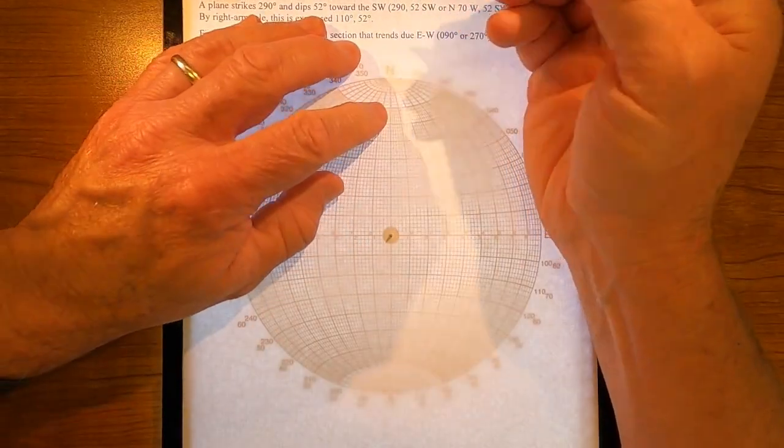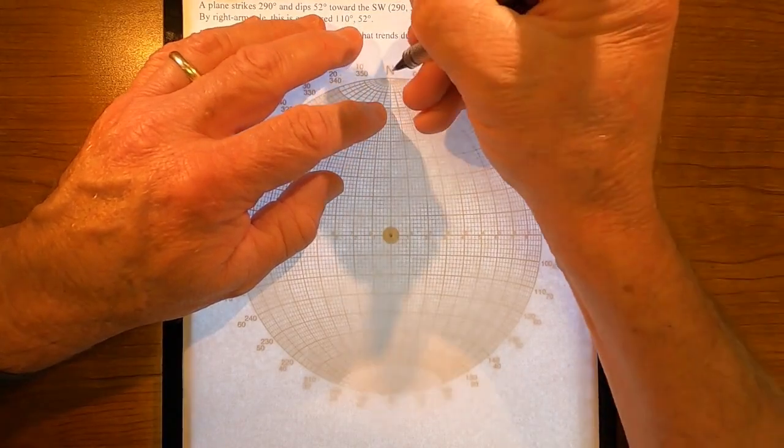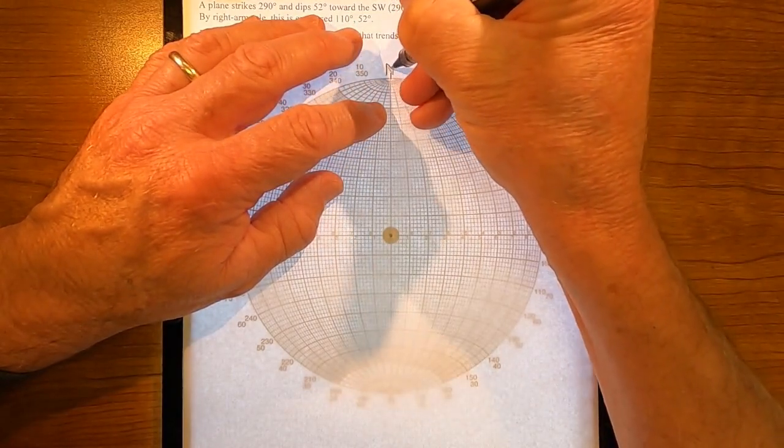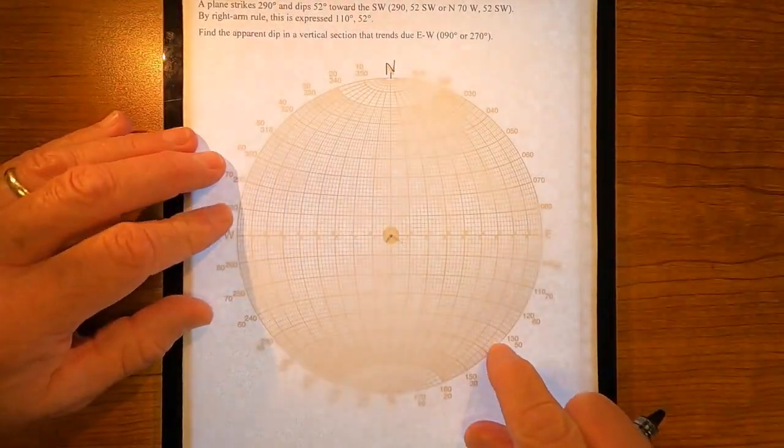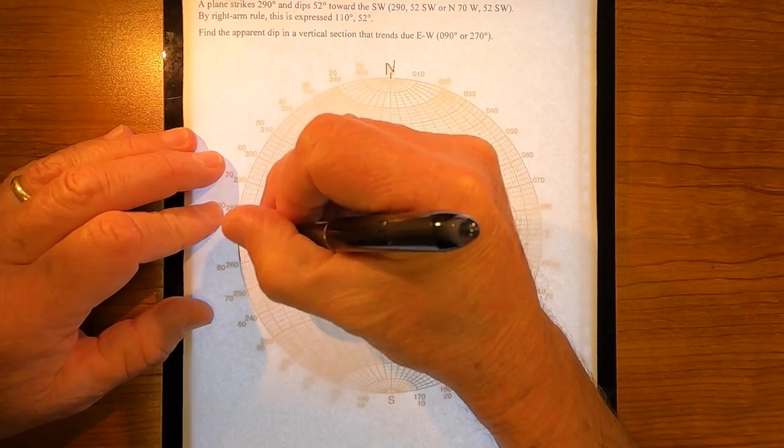What do I do first after that? I mark north. There's north. What do I do next? I trace the primitive great circle.